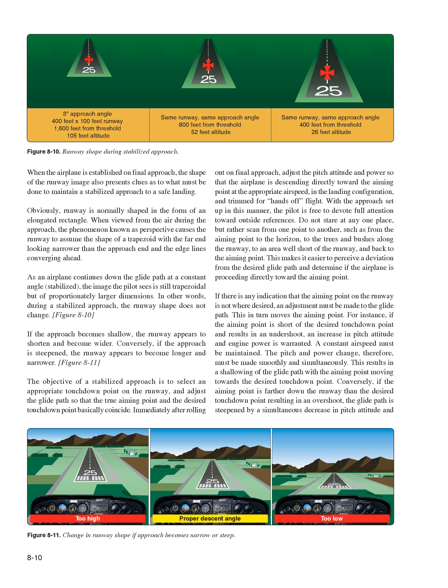The objective of a stabilized approach is to select an appropriate touchdown point on the runway and adjust the glide path so that the true aiming point and the desired touchdown point basically coincide. Immediately after rolling out on final approach, adjust pitch attitude and power so that the airplane is descending directly toward the aiming point at the appropriate airspeed, in the landing configuration, and trimmed for hands-off flight. With the approach set up in this manner, the pilot is free to devote full attention to outside references. Do not stare at any one place, but rather scan from the aiming point to the horizon, to trees and bushes along the runway, to an area well short of the runway, and back to the aiming point.